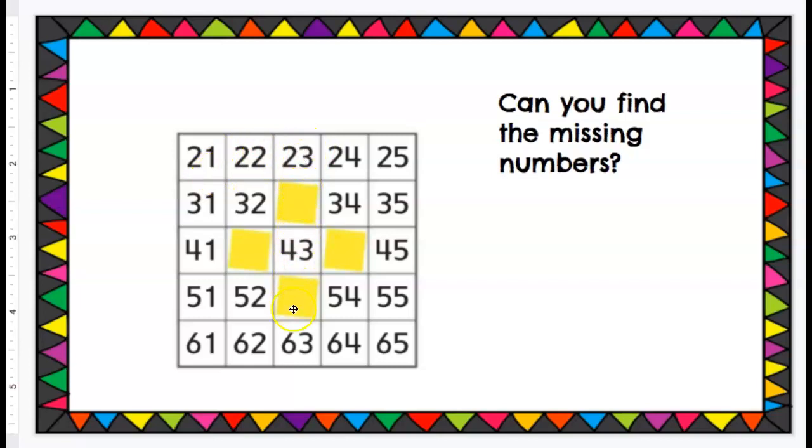We know that this is the 3 column, but look, this is also the 30 row. All our numbers start with a 3 in the tens place. So they are 30s, right?